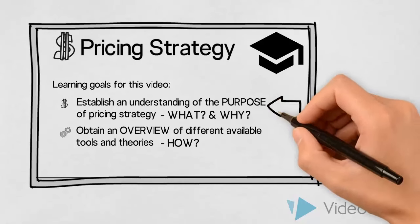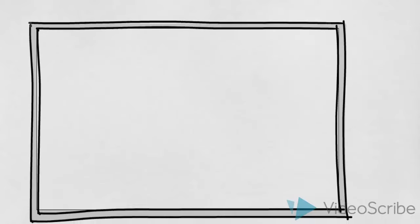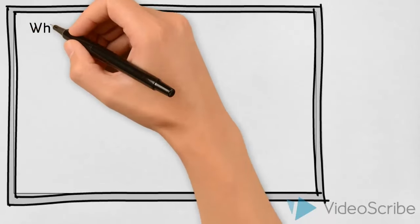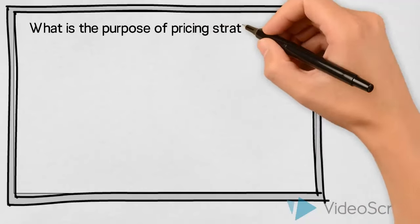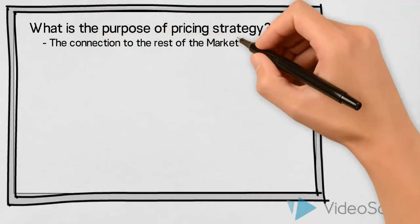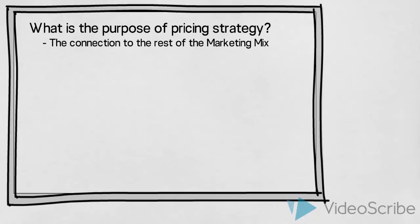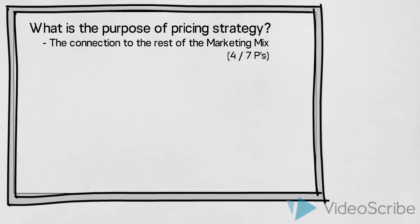So, what is the purpose of pricing strategy and what is the connection to the rest of the marketing mix? When you are asked to design the marketing mix, you need to make decisions on four or seven core elements, also known as the four or the seven P's.